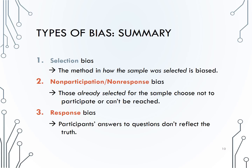Remember, selection bias comes from the method in how the sample was selected. Non-response bias occurs when we've already selected a sample, but people choose not to participate or can't be reached. Response bias occurs once I have already collected my sample and people have agreed to participate, but their answers to questions don't reflect the truth.